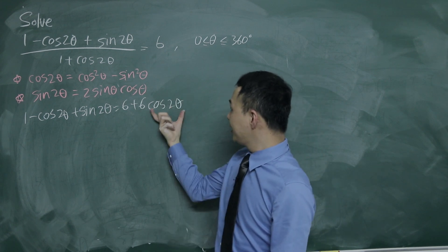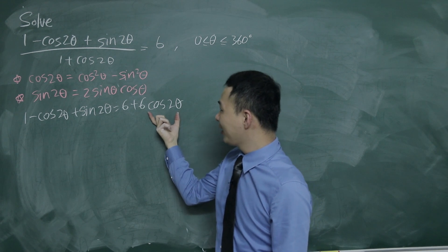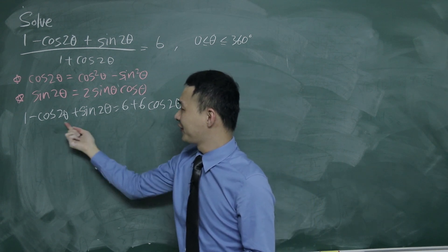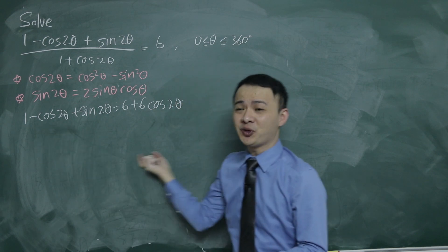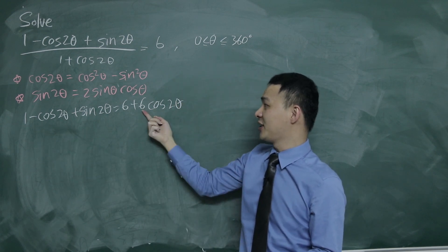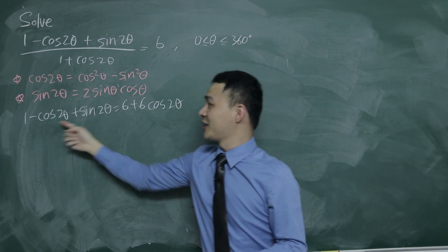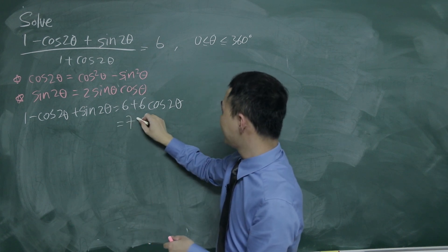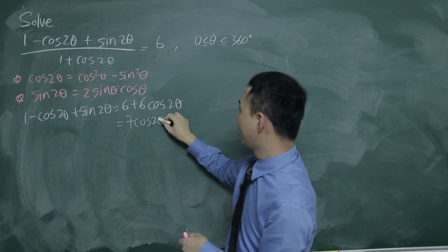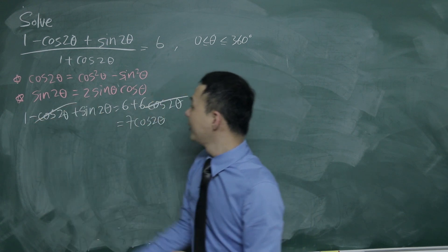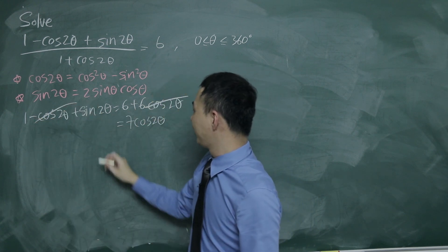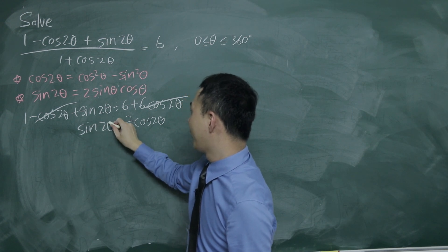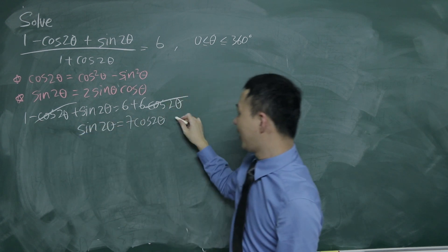I have 6 cos 2θ on the right and minus cos 2θ on the left — moving it over gives plus 1, so cos 2θ becomes 7 cos 2θ. Then for the sine term, I leave sin 2θ here. On the right side, 6 minus 1 gives plus 5.